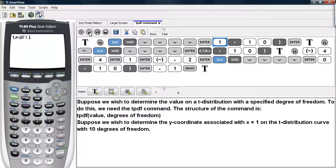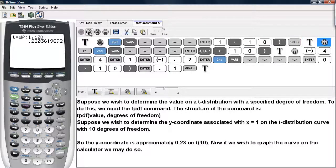Then you give it the x value, which in our case is 1, and then a comma, and then the degrees of freedom, which are 10, and then hit enter. So, the y-coordinate is approximately 0.23 on a t-distribution with 10 degrees of freedom.